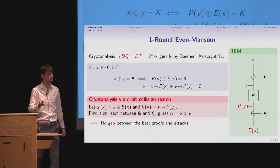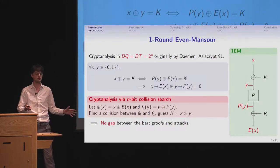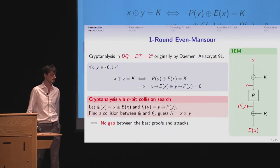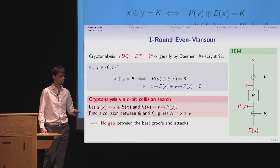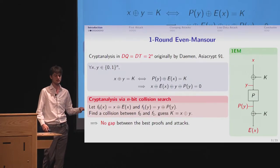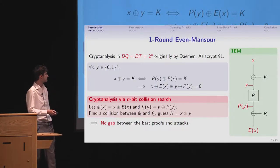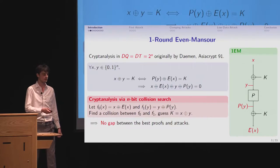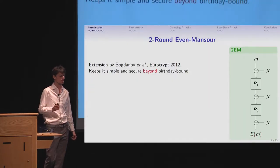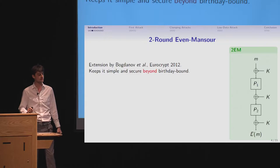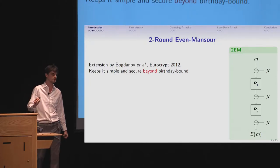In other words, this means that collision searching, we know how to do it. We just do it in its birthday bound. We know how to do it quite efficiently in terms of time, just the time to read the list. So there's really no gap between the best proof in attack in the one round Even-Mansour. However, in this talk, we'll talk more about the two round Even-Mansour.